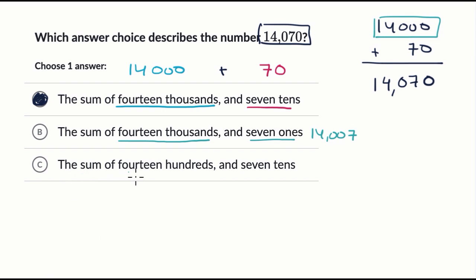And then the last one, the sum of fourteen hundreds and seven tens. Well, they have the seven tens part, which we already said is the same thing as 70, but what does fourteen hundred look like?